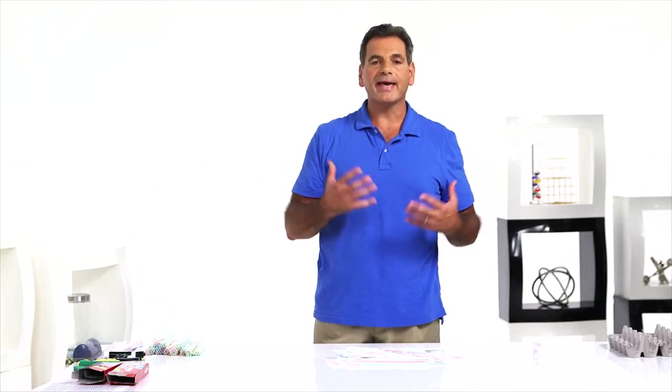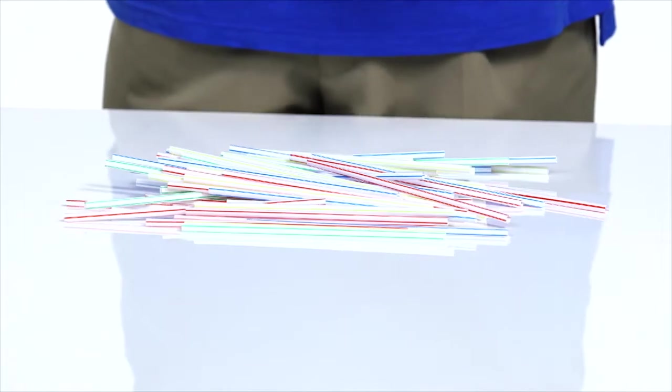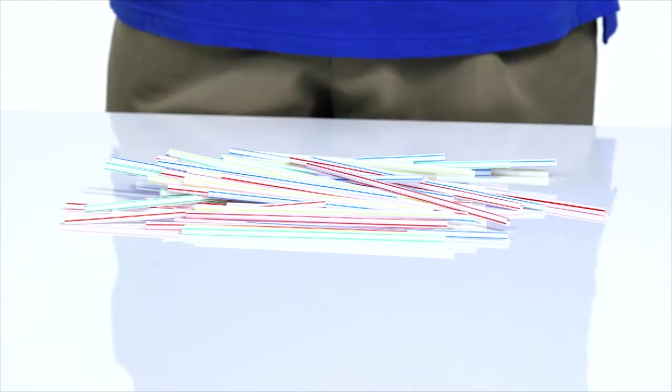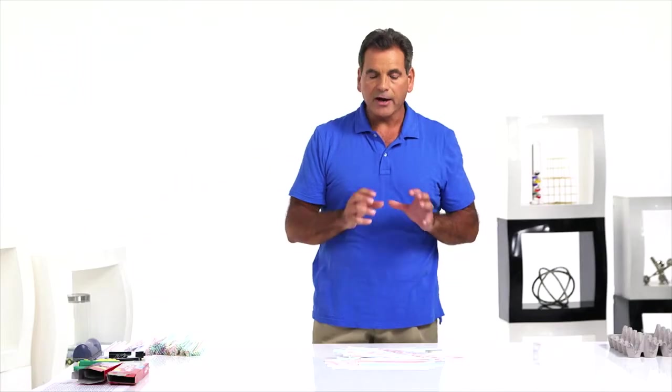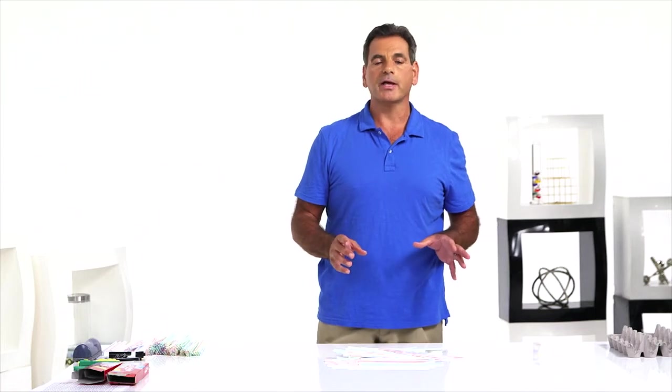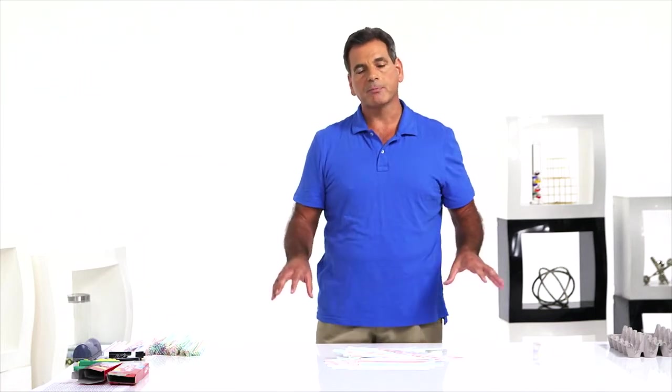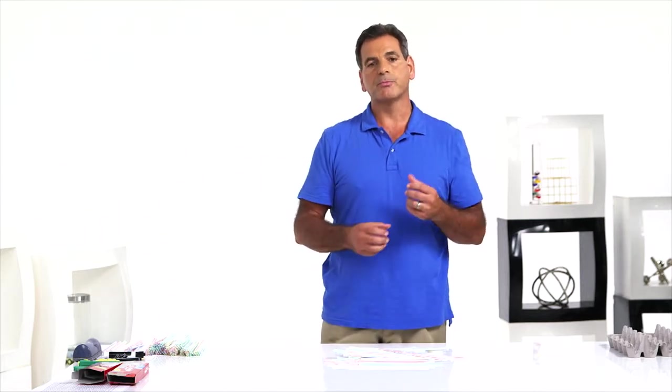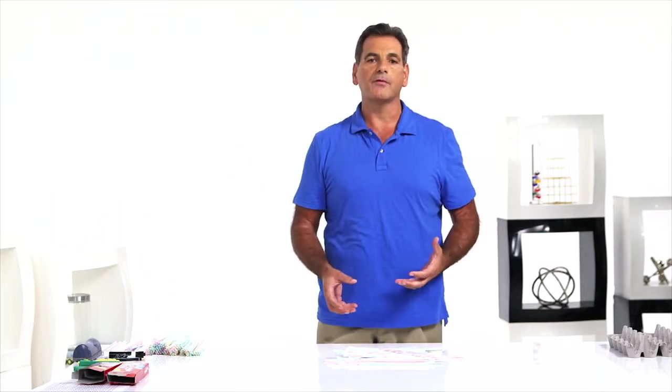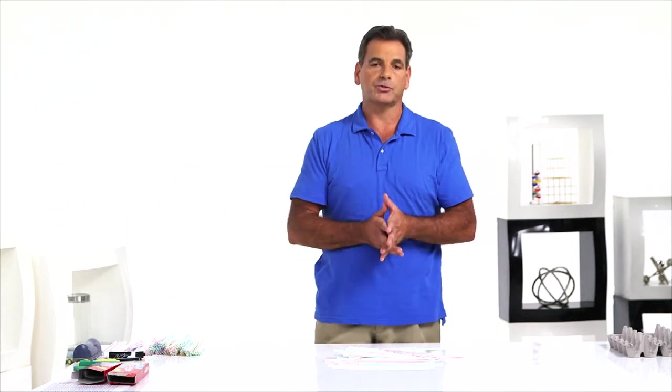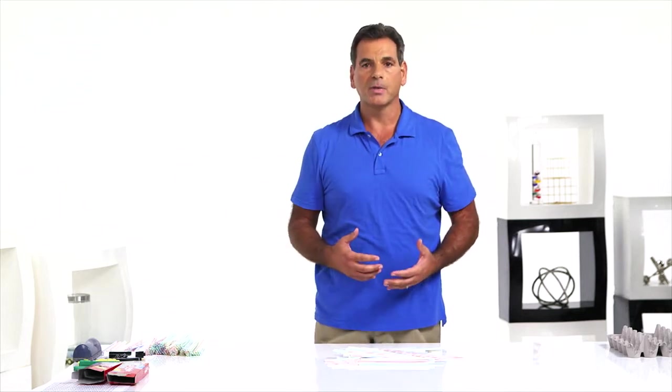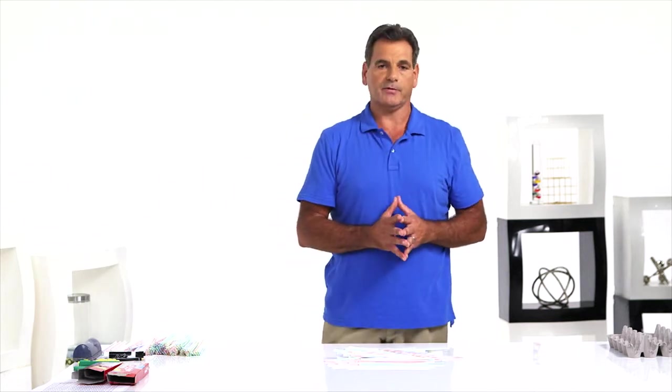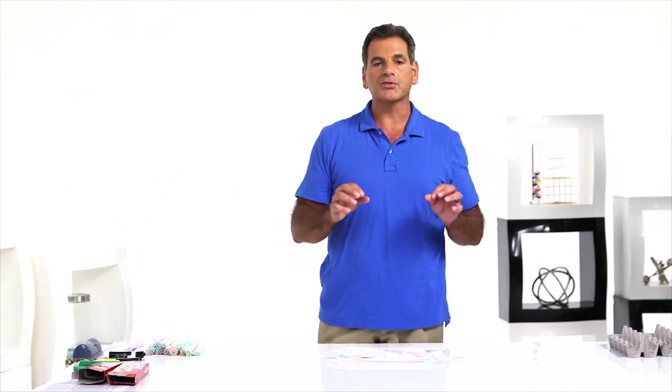Before they start counting, get some guesses. Look at that pile. How many straws do you think are there? Record those guesses on the board and then let them begin counting. They are going to count in many, many different ways. You're going to have kids split up the piles, count their own pile, add the piles together. You'll have students put them in piles of five and count by fives, put them in piles of two and count by twos, count them one at a time. None of that matters. Just let them count.